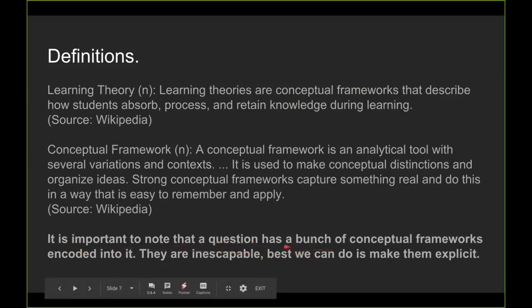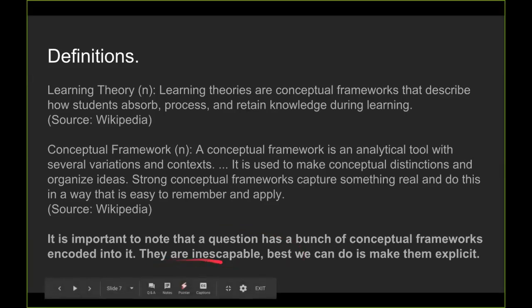It's important to note that a question has a bunch of conceptual frameworks encoded into it. When you ask 'does a learner know X?', that's just the beginning. What entails from that is a discussion about what is 'know,' what is 'X,' what is the learner's knowledge, and what data do we have access to. These are all things encoded into that question — they're implied but inescapable. The best thing we can do, especially from an engineering perspective, is to make them explicit so we actually know what we're talking about.